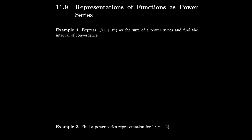Section 11.9: Representations of functions as power series. We want to try to write power series for a few different functions. Remember that we already saw one where we had one over one minus x, and we said that that was equal to one plus x plus x squared plus x cubed and so on, because that was just the geometric series, the sum of x to the n. We said this converged as long as the absolute value of x was less than one — that was in Section 11.2, Example 7.